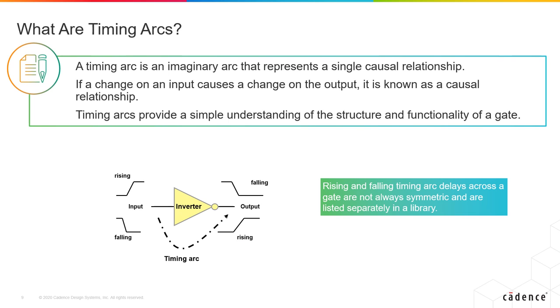What are timing arcs? If a change on the input is causing a change in the output, then we have a causal relationship. If the input in this inverter is rising and the output is falling, or when the input is falling, the output is rising. This dependency of the output on these inputs is called a causal relationship.